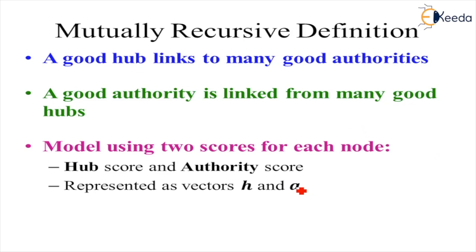This leads to a mutual recursive definition: a good hub links to many good authorities, and a good authority is linked from many good hubs. We use the concept of hubs and authorities based on their quality. The model uses two scores for each node: a hub score H and an authority score A. Vectors H and A are created during the calculations.